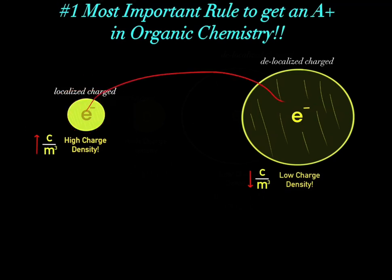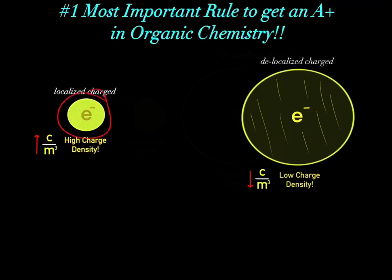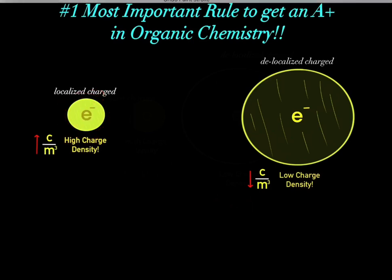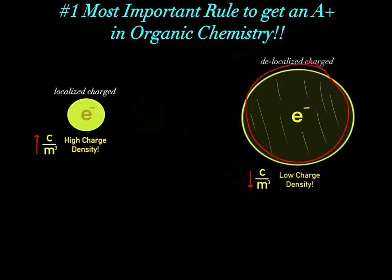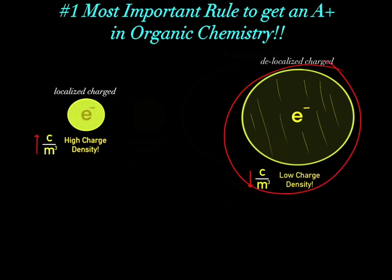Both electrons have the same amount of negative charge. However, the first electron has its charge within a small volume — that's the same amount of charge over a smaller volume, giving a very high negative charge density. The second electron has the same amount of negative charge but spread over a larger volume, so it has a lower charge density.